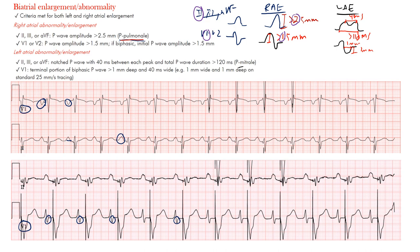For right atrial enlargement, we look at the initial portion in V1 — we don't really see it here. But in lead II, the P waves are peaked at least 2.5 millimeters. So right atrial enlargement was also present, meaning this patient had biatrial enlargement.